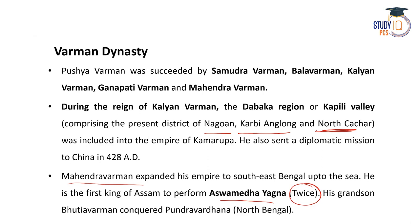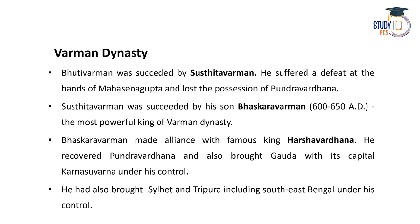The Ashvamedha Yajna involves releasing a horse after a Yagna and is also mentioned in the Mahabharata — Yudhishthira also performed the Ashvamedha Yajna. Mahendravarman's grandson Bhutivarman conquered Pundravardhana, present-day North Bengal. Bhutivarman's successor Susthitavarman suffered a defeat at the hands of Mahasena Gupta and finally lost possession of Pundravardhana or North Bengal.